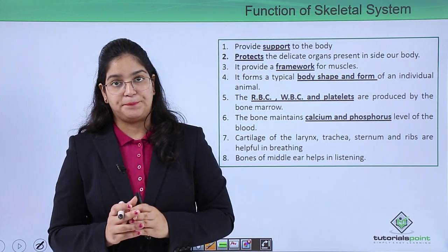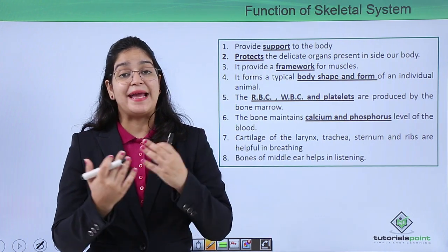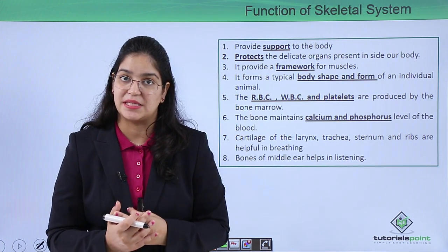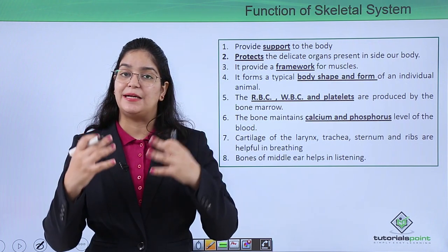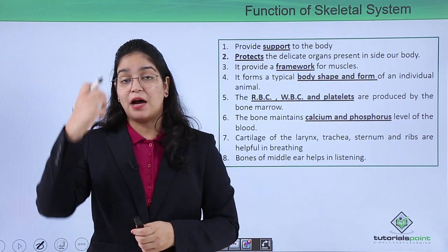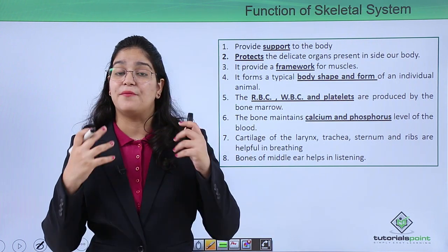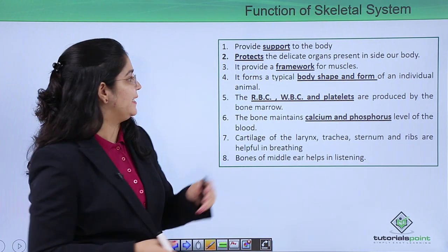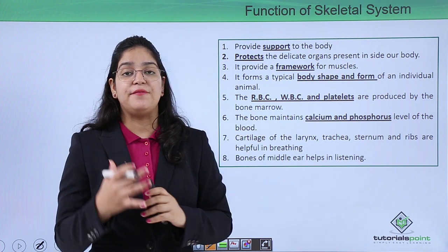The skeletal system also protects the delicate organs of our body. Our heart and lungs are well protected by the ribs. Our brain, which is very important, is protected by the skull. Without the skeletal system, our body would be very fragile or very delicate.